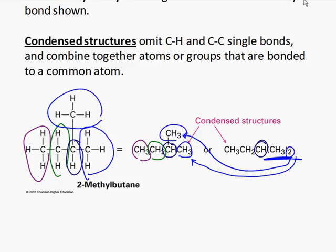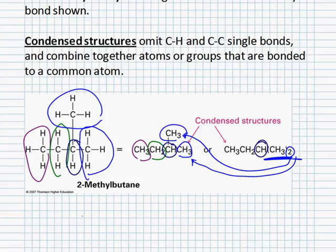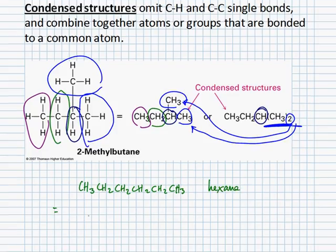something like hexane, CH3, CH2, CH2, CH2, CH2. So I've got a CH3, I've got four CH2s, and then a CH3 on the end. That's hexane. I can abbreviate that by saying CH3, CH2, and there are four of them repeating, and then CH3.